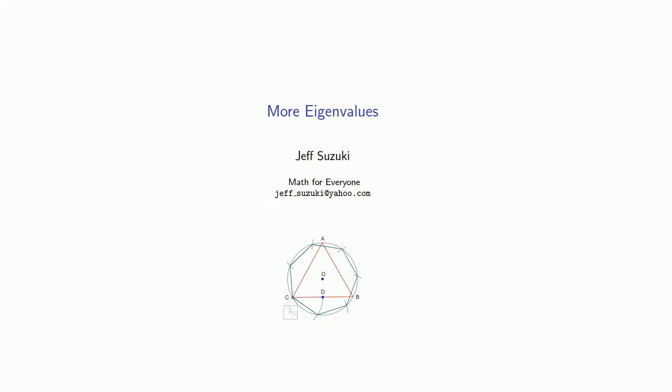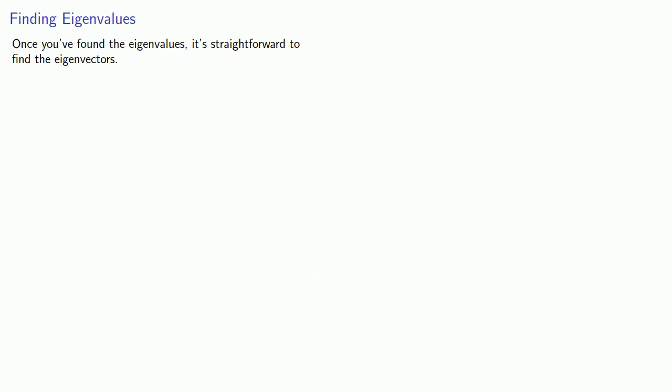Let's take a closer look at the problem of finding eigenvalues and eigenvectors. The important thing to observe is that once you've found the eigenvalues, it's straightforward to find the eigenvectors. But how do you find the eigenvalues?